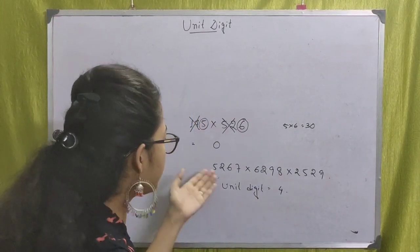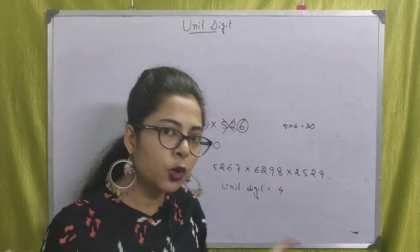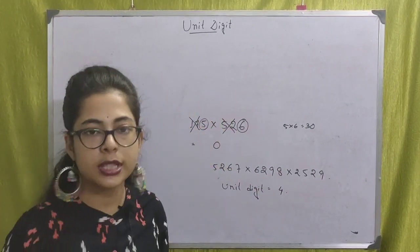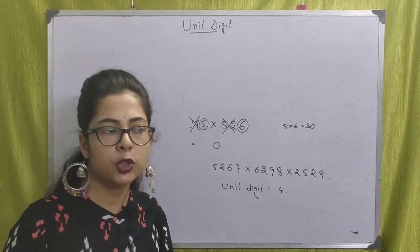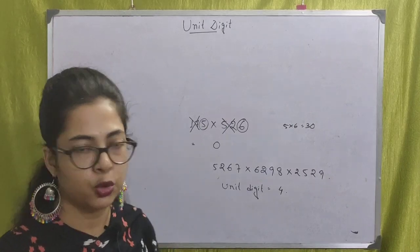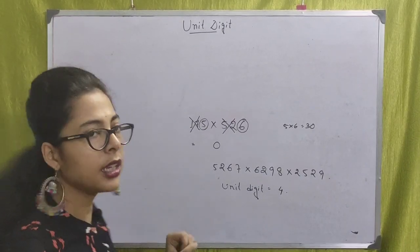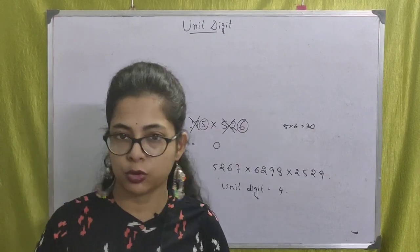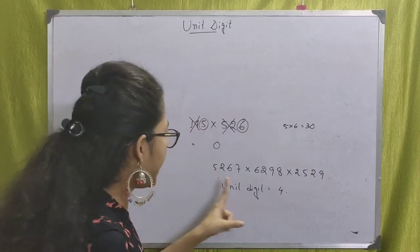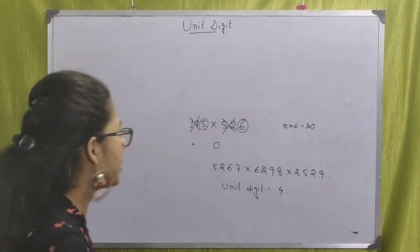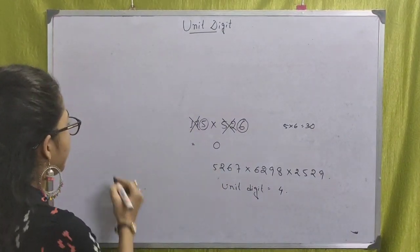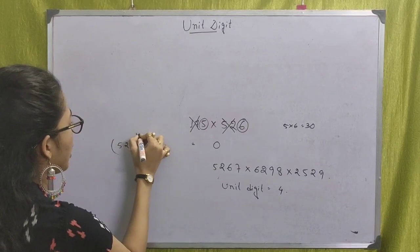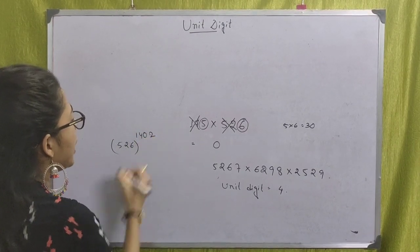Just in a few seconds, by following the rules and tricks, we can easily find the unit digit. Now, let's consider 526 to the power of 1402.